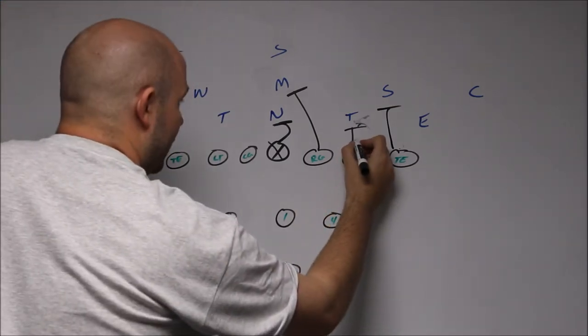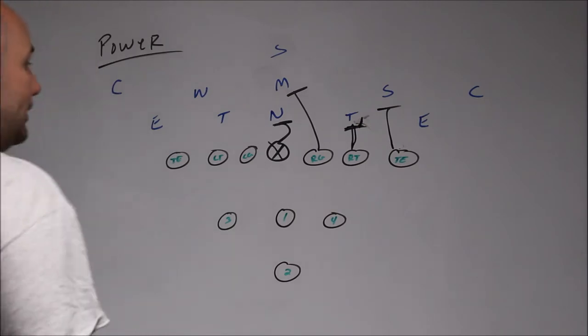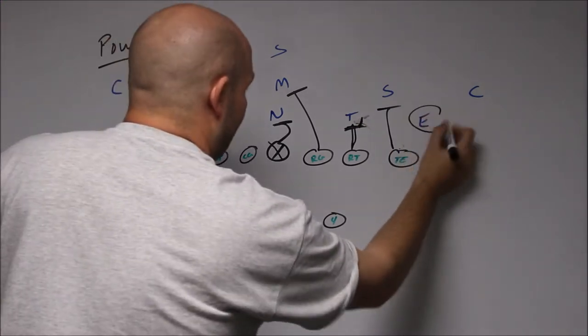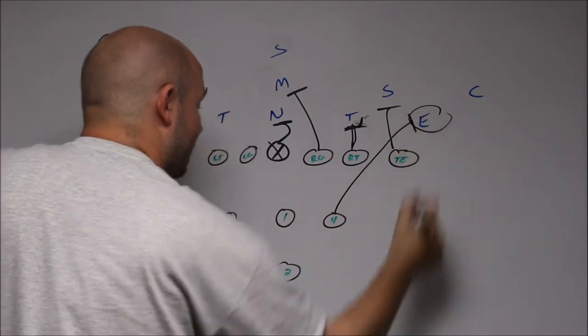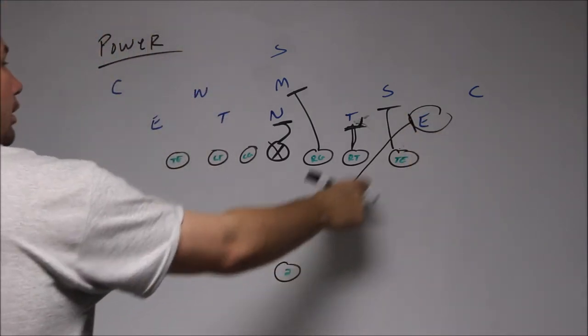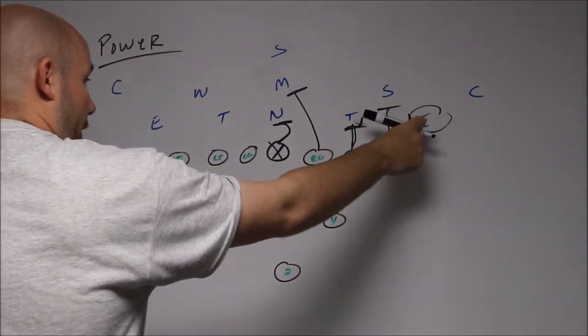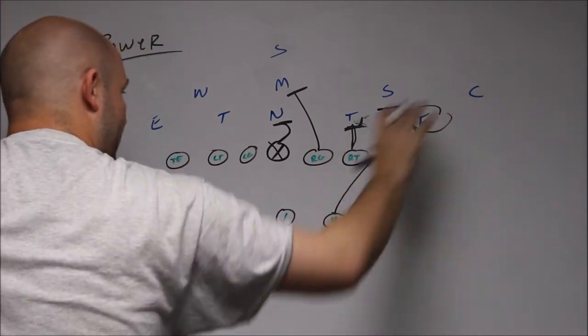So this tackle should take a step play side and really base this kid. We're going to kick out the end man on the line of scrimmage. So our fullback is going to come and he is going to kick out this defensive end. The aiming point is the inside hip of this defender. We really want to gut this kid out.